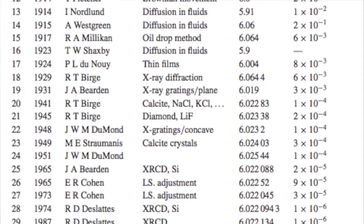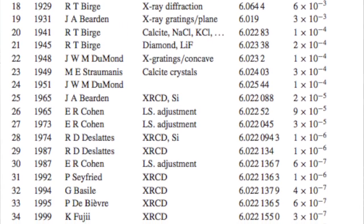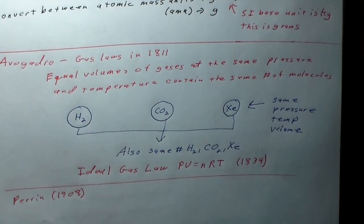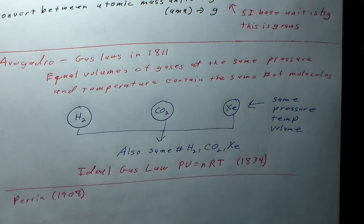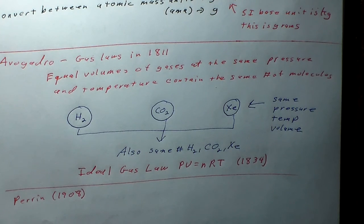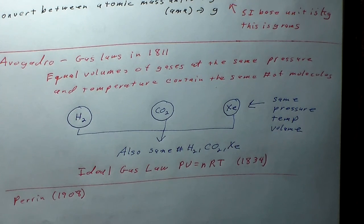The first good attempt came in 1908 by Perrin. His estimate of Avogadro's number led him to propose that this value they had been searching for so long be named after Avogadro in his honor. From then on it was known as Avogadro's number, and over the last century measurements have gotten better and better.